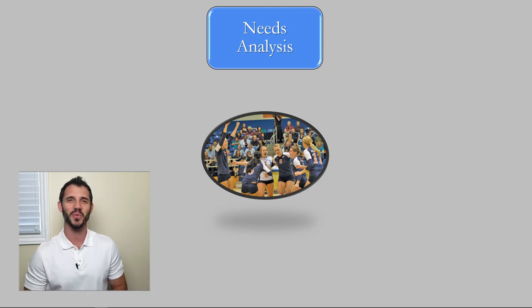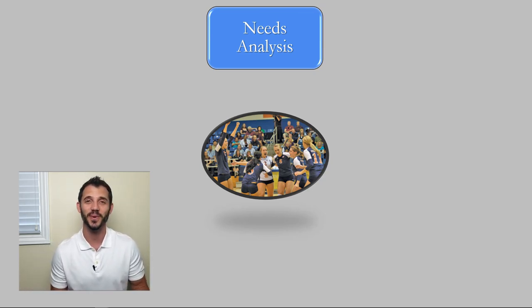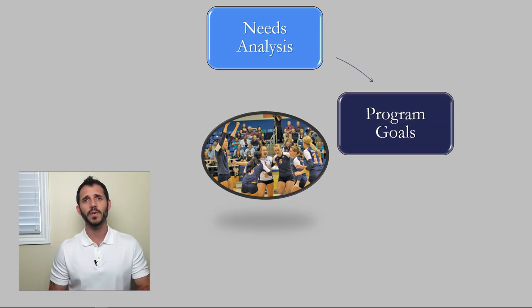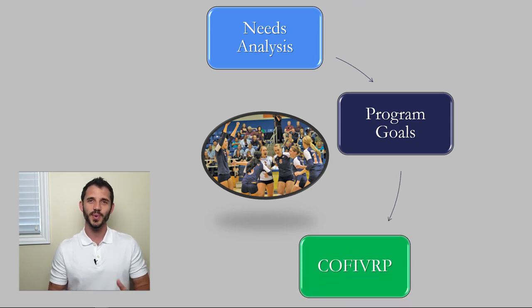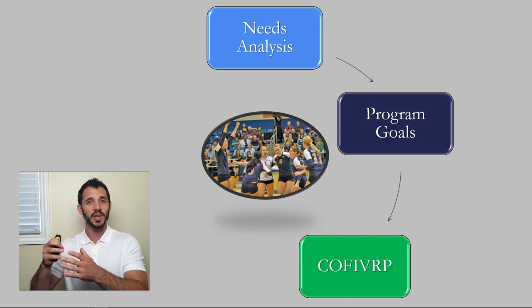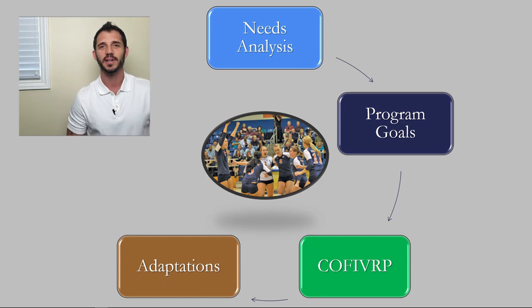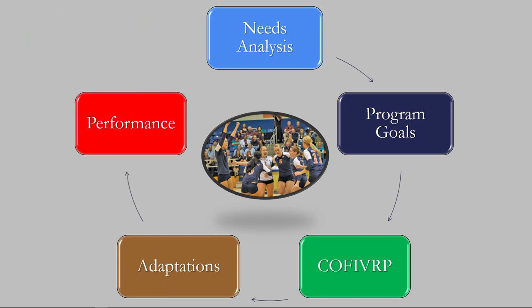Before we do that, we've got to understand how program design works. First, you have to understand what you're training for to begin with. I've got a separate video on needs analysis. You need to run some sort of testing — you can go watch that video. From there, you determine your goals, and now we get to our green step, which is the focus of today: modifiable variables.